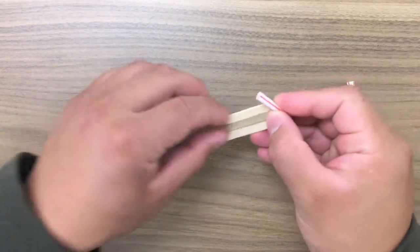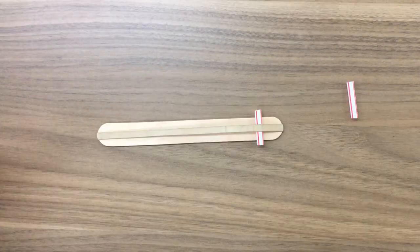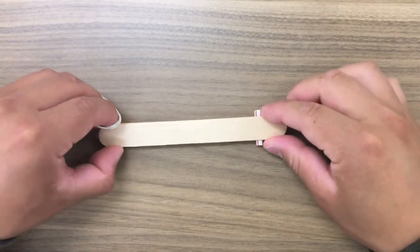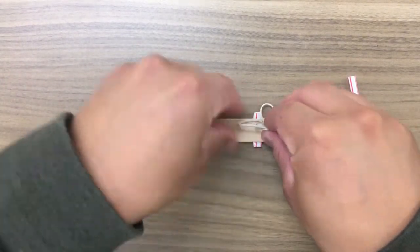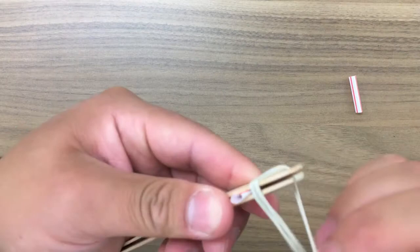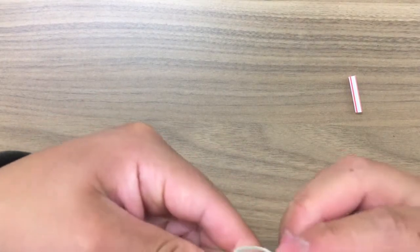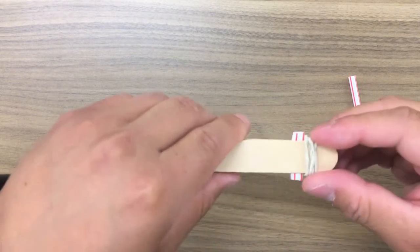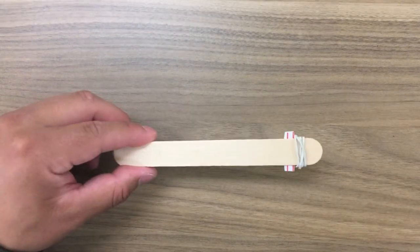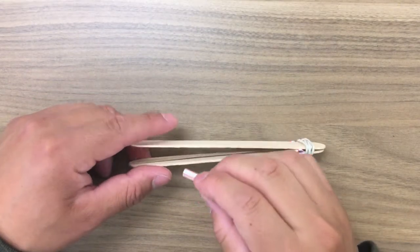the straws under the rubber band. Put the other craft stick on top and attach them with one of the small rubber bands on the same end as the straw. Stick the other piece of straw on the other